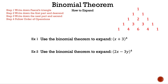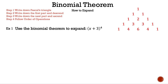Now let's take a closer look at example one. Step 1: write down Pascal's triangle. Step 2: write down the first part and descend. Step 3: write down the next part and ascend. Step 4: follow order of operations. The question: use the binomial theorem to expand the quantity of x plus 3 raised to the power of 4. We've already written down Pascal's triangle. Since our power is 4, we have 5 terms because 4 plus 1 is 5. So let's write down the coefficients 1, 4, 6, 4, and 1 from the 5th row, and put addition signs in between each term.